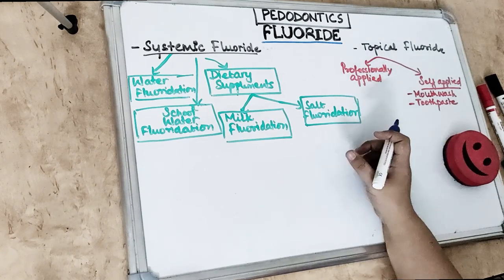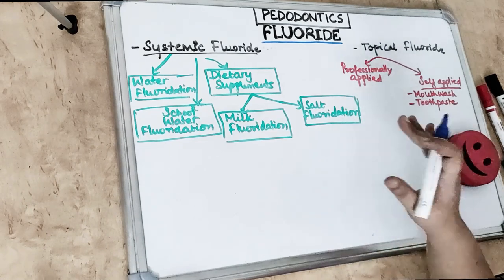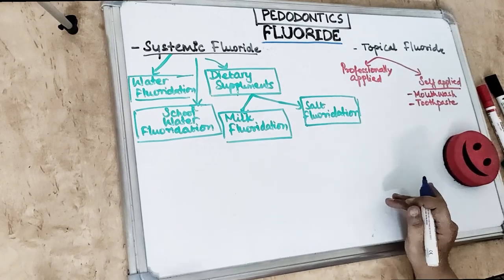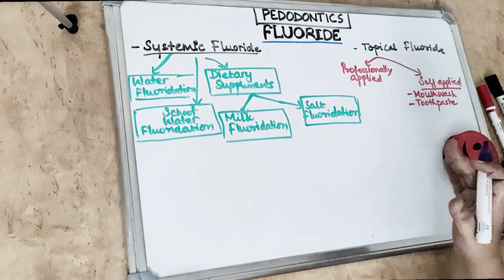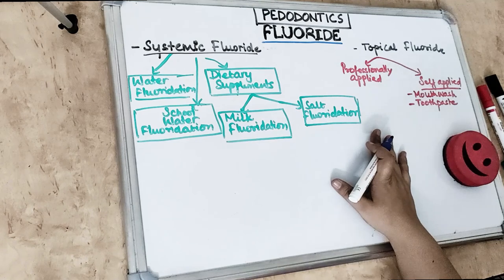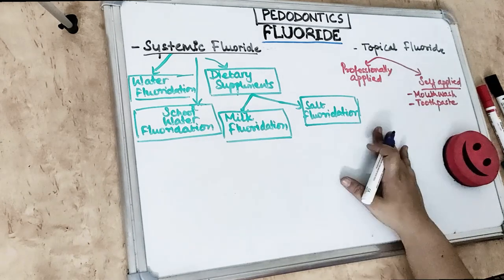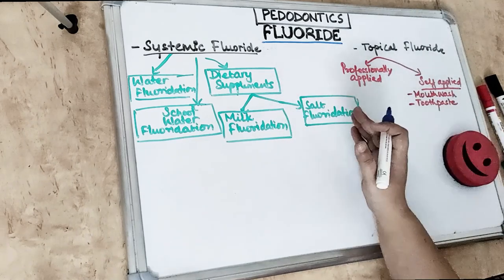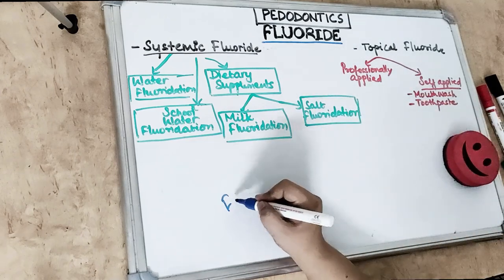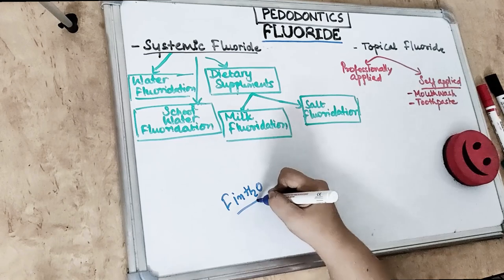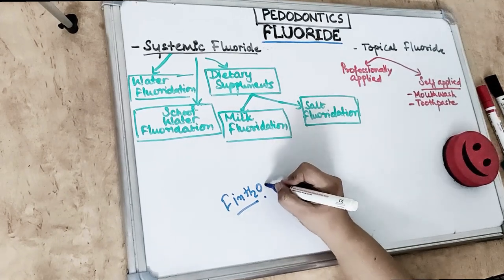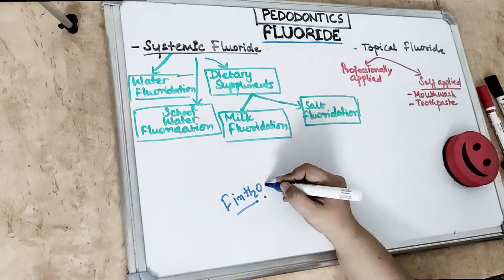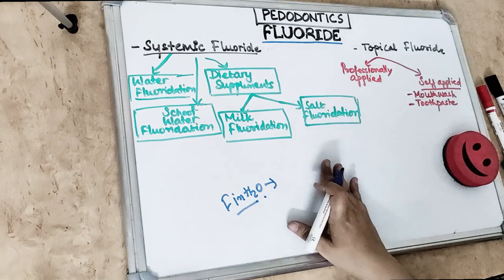After ingestion, fluoride can be absorbed and incorporated into the enamel, benefiting teeth before eruption. It also benefits teeth after eruption when it returns to the mouth in saliva. Fluoridated water — incorporating fluoride into drinking water — is the most effective way to deliver fluoride, as it provides both systemic and topical effects at the community level.